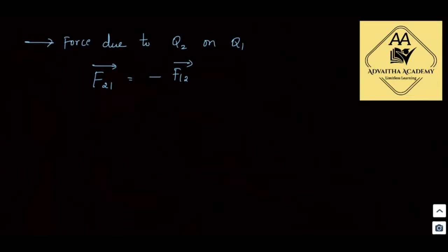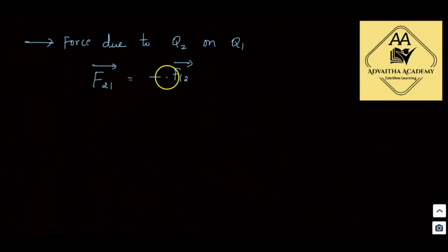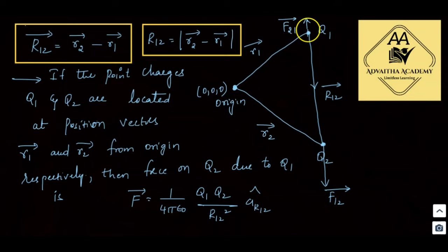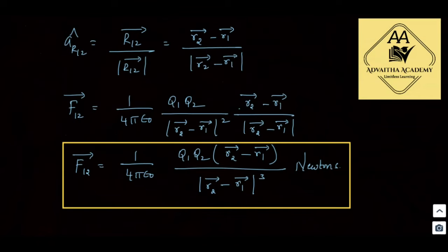F21-bar = −F12-bar: the two forces between point charges are equal in magnitude but opposite in direction. The magnitude is the same for both, only the direction differs. So F12-bar = −F21-bar, consistent with Newton's third law.